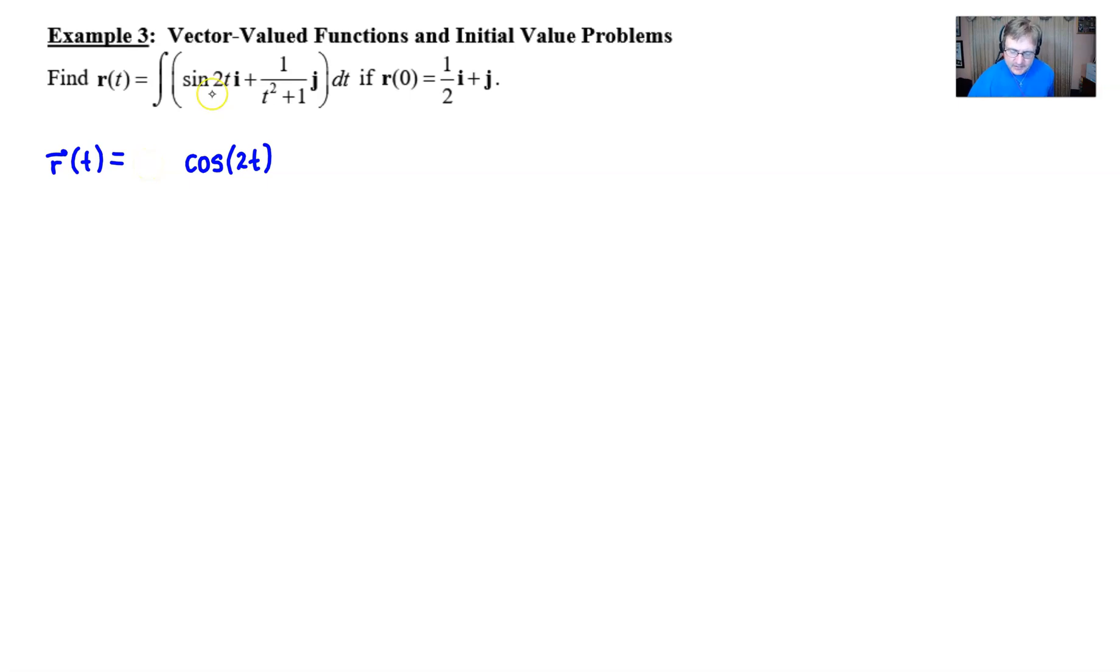But you also have to consider the fact that u in this problem is equal to 2t. It's a u substitution problem on top of that. The derivative of 2t is 2, and remember with integration you have to flip that upside down to offset. We still have a constant. We still put our plus c1 there because this is not a definite integral. It's an indefinite integral. And of course, have your i.